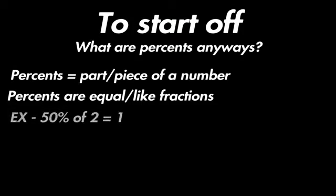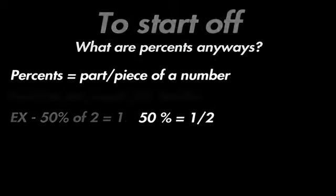For example, 50% of 2 is 1 because 50% basically translates to one half of something, and instead of fractions you can use them in decimal form as well, so 50% would be 0.5 or 100% would just be 1.